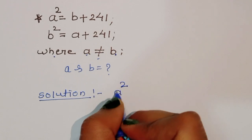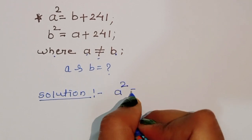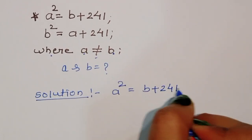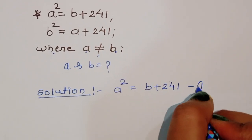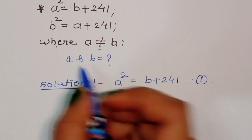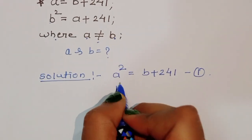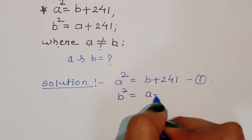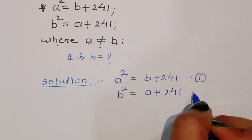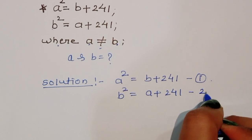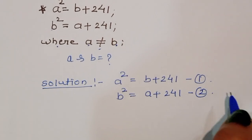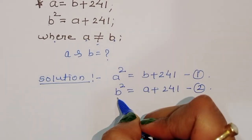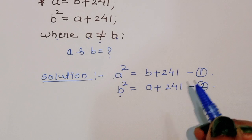First, what is given: A squared is equal to B plus 241 — this is equation 1. Next, B squared is equal to A plus 241 — this is equation 2. Now we can subtract equation 2 from equation 1.